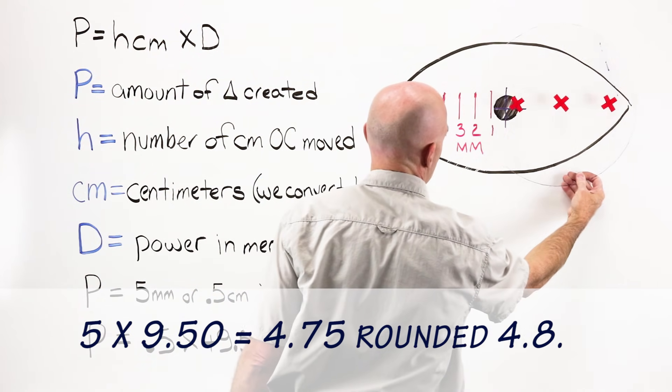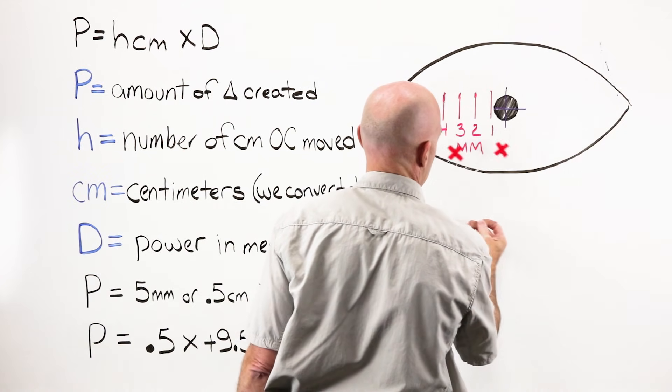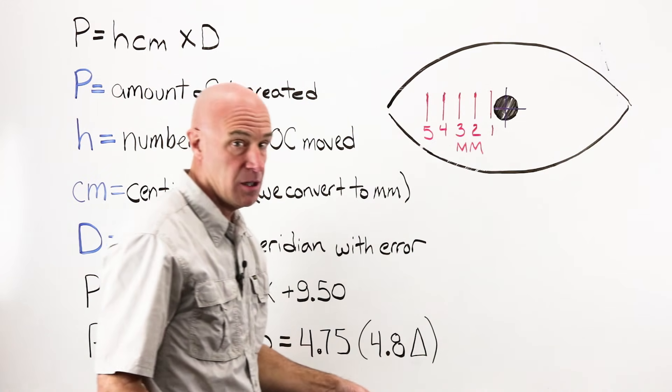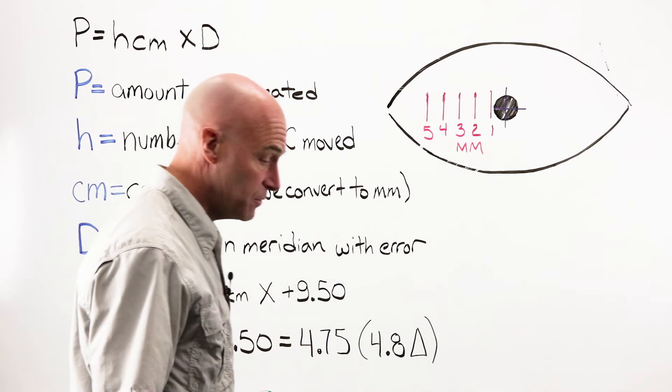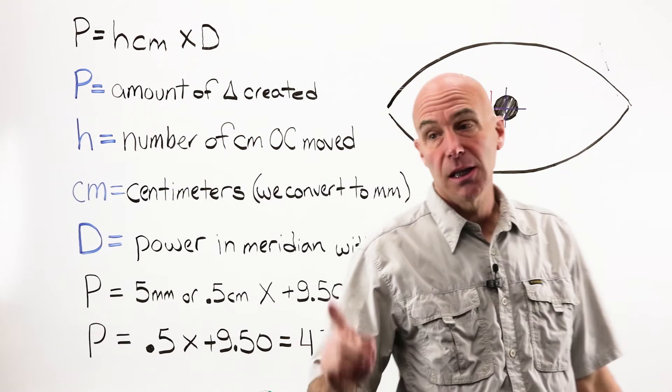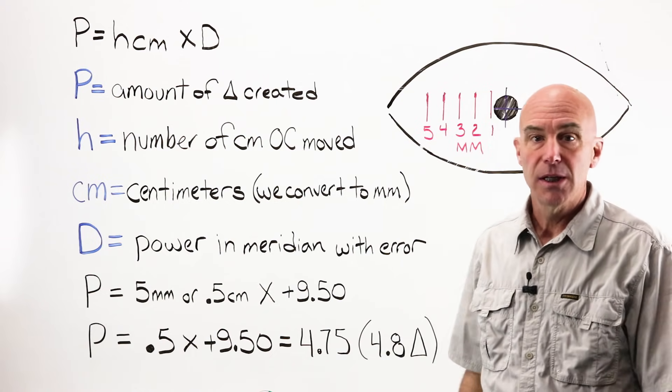That could, of course, also go over to this side, up here, down, etc. And that's where we're headed. That's the concept. That's Prentice's formula. And let's go ahead and work three examples.